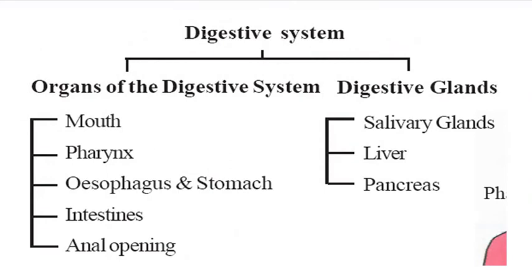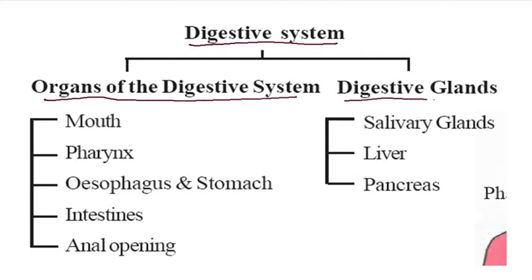First of all, it is the digestive system. The digestive system is divided into two parts: the first one is the organs of the digestive system, and the second one is the digestive glands.